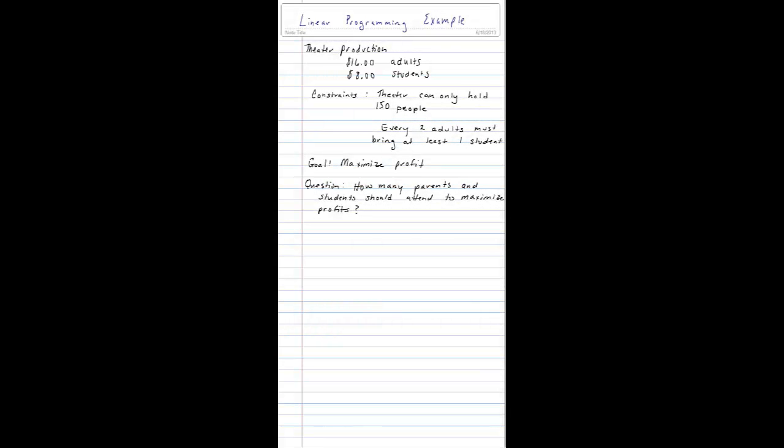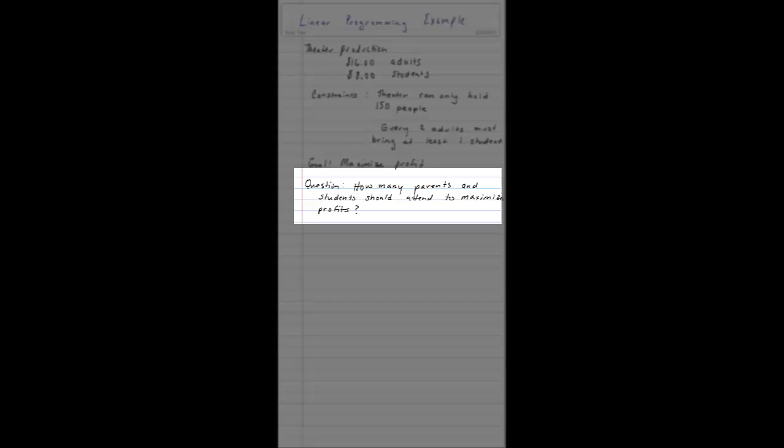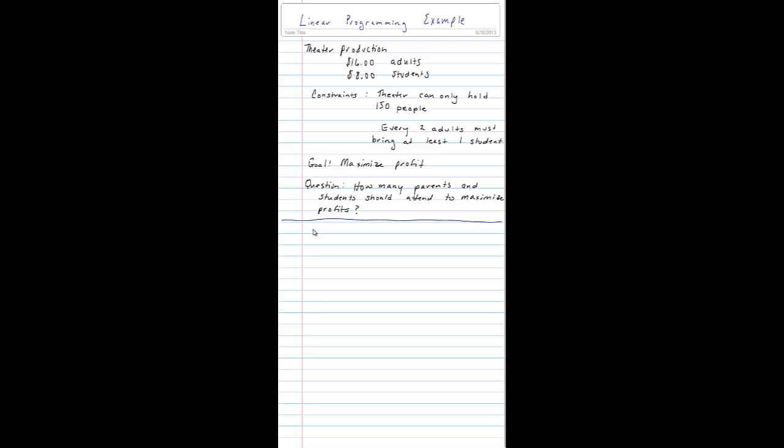Our constraints are that the theater can only hold 150 people. And also, for every two adults, you must have at least one student. Our goal is to maximize profit, and the question states, how many parents and students should attend in order to maximize profits?